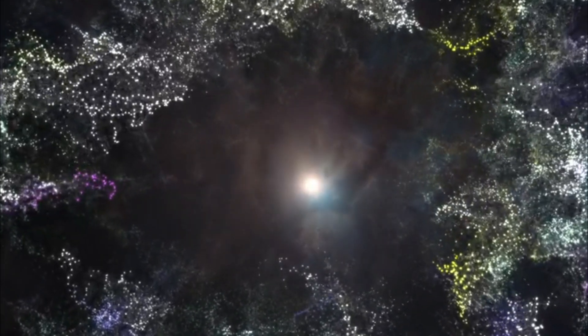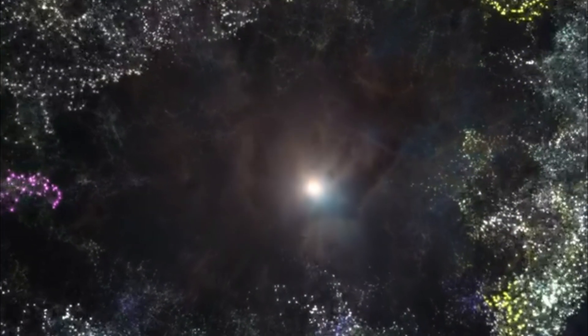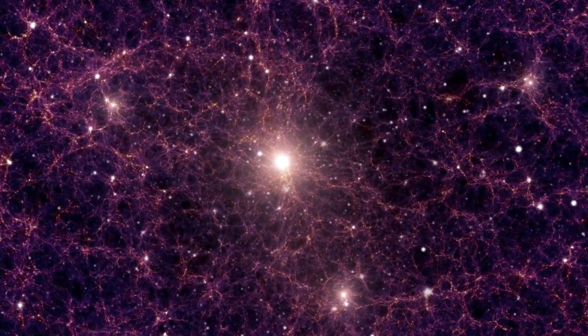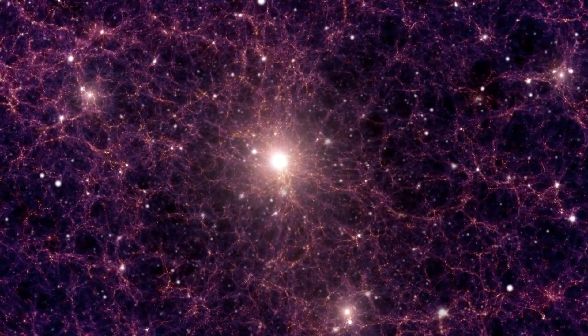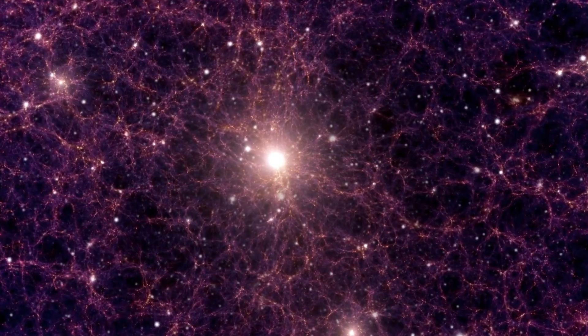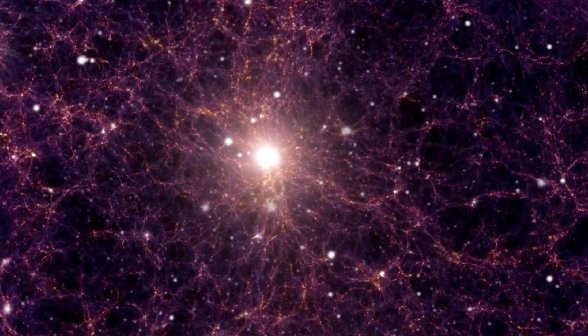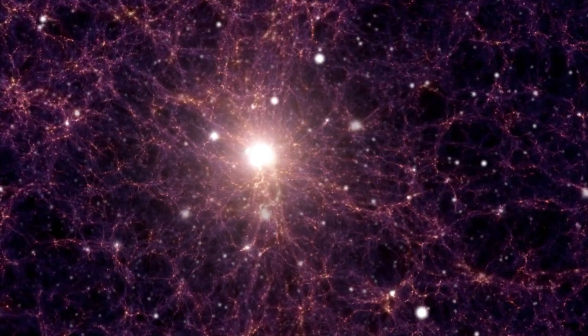These bright knots of light are actually massive star-forming regions, where millions or even billions of stars are born in dense, fiery nurseries. The discovery gives scientists an unprecedented look at the chaotic early universe, revealing how galaxies first took shape.